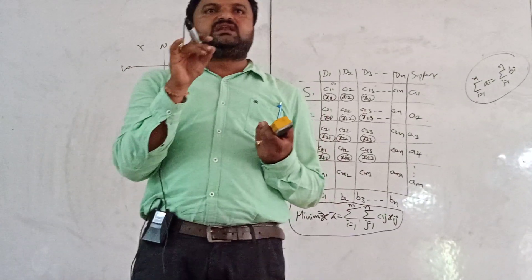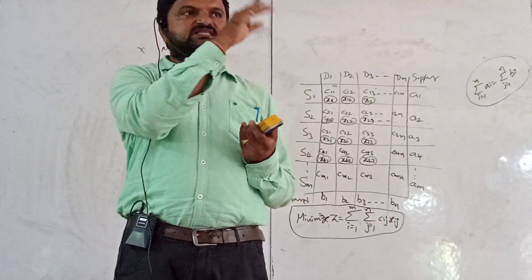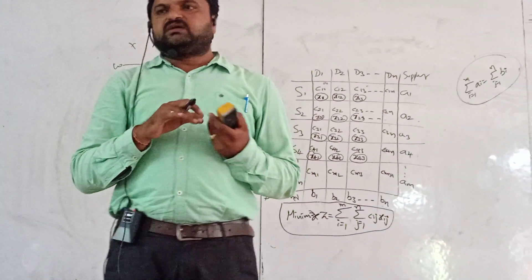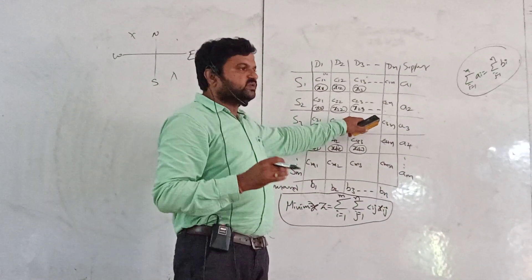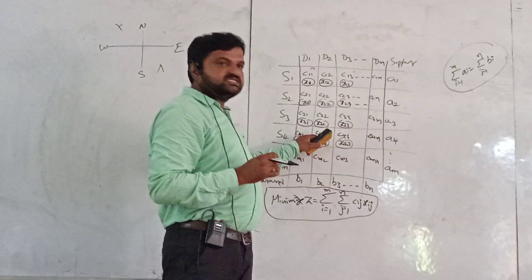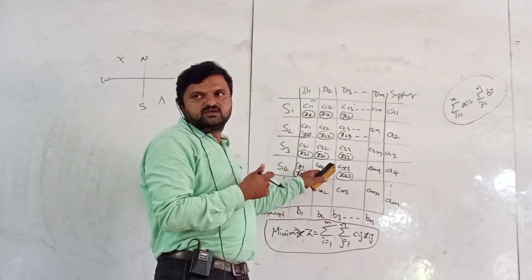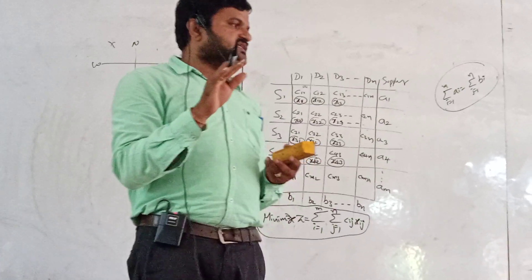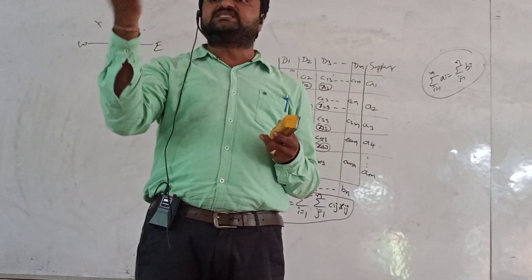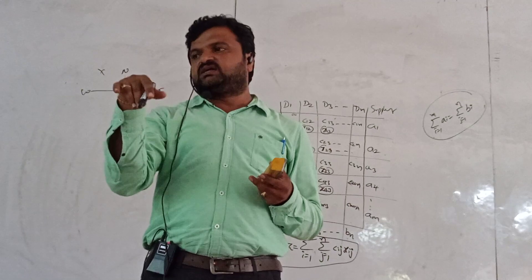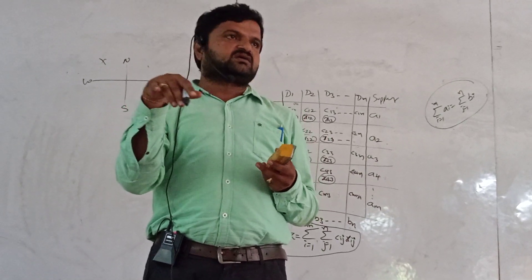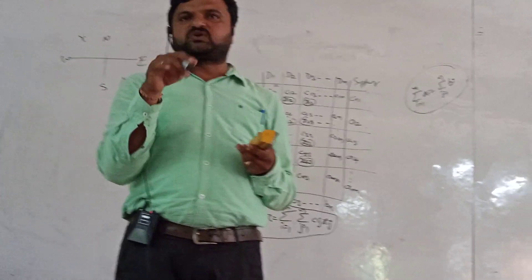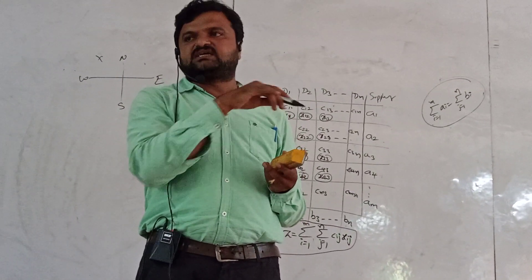Next is the Least Cost Method. We can allocate the cell which is having the least cost in the entire transportation table. First we allocate the least cost cell, then we observe what is the next least cost and allocate that cell. We continue this process until all cells are allocated.